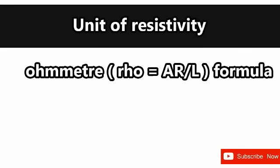Unit of resistivity — Answer: Ohm meter. Ohm meter is the unit of resistivity. Resistivity is the electrical resistance per unit length and per unit cross-sectional area. Formula: rho equals A·r divided by L.